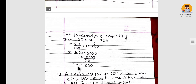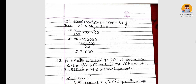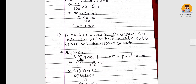Let the total number of people be Y. Since 20% of Y = 200, therefore Y = 1000. So total number of people in the survey is 1,000.